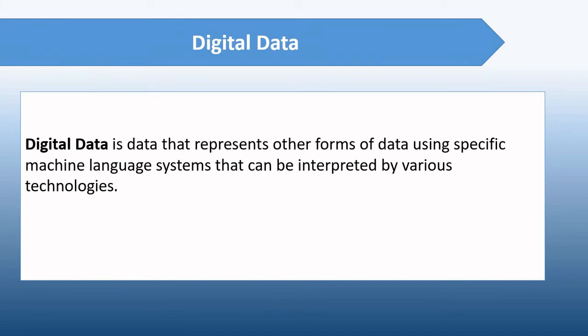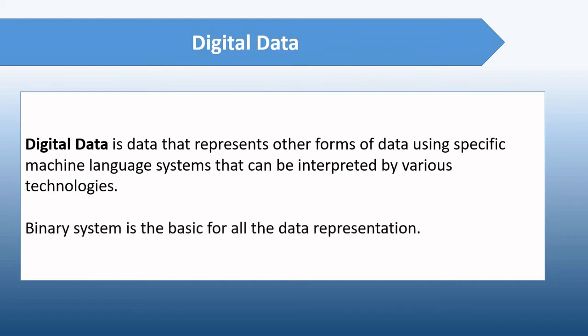Digital data is data that represents other forms of data using specific machine language systems that can be interpreted by various technologies. The binary system is the basis for all data representations. Binary systems use a combination of two numerals — ones and zeros, or on and off values — to be interpreted by technology. Computers use the binary number system to manipulate and store all data, including numbers, words, videos, graphics, and music.